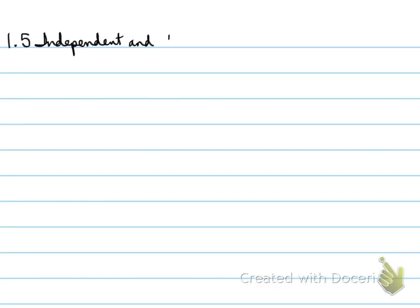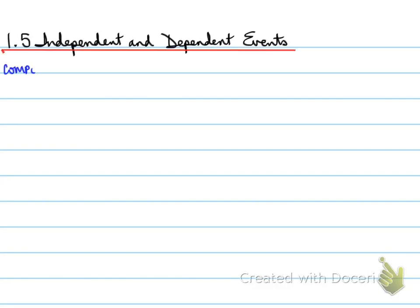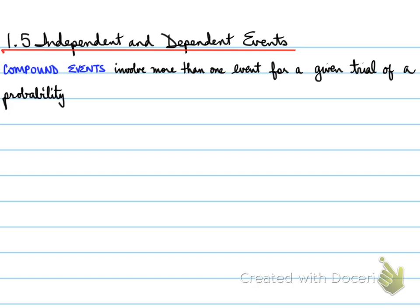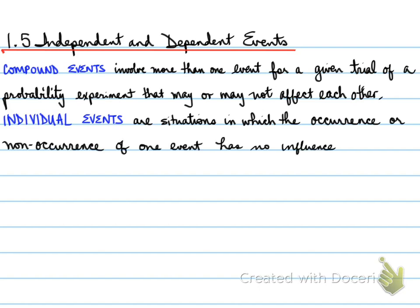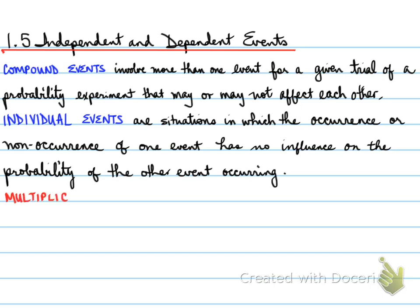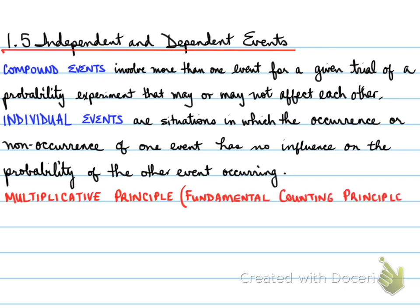Looking at 1.5 independent and dependent events. Compound events involve more than one event for a given trial of a probability experiment that may or may not affect each other. Independent events are situations in which the occurrence or non-occurrence of one event has no influence on the probability of the other event occurring. The multiplicative principle, known as the fundamental counting principle, is as follows for independent events.